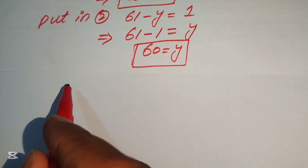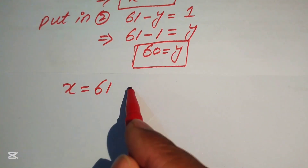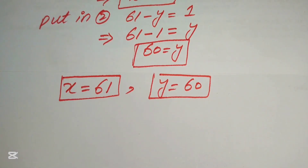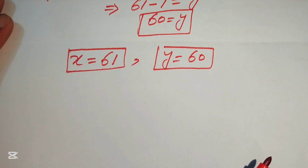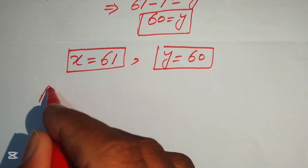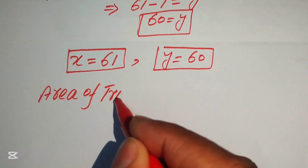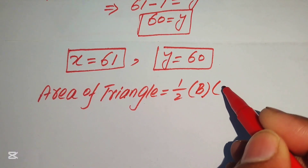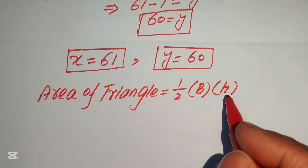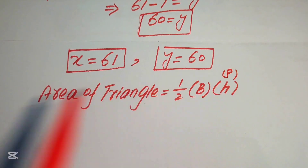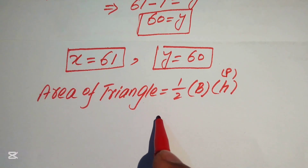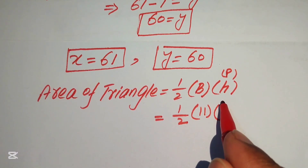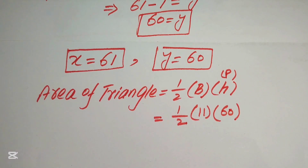Both values x equals 61 and y equals 60 are positive integers, as required. Now we move on to find the area of the given triangle. The formula for the area of a triangle is: area equals one-half times base times height, where height is the perpendicular side.